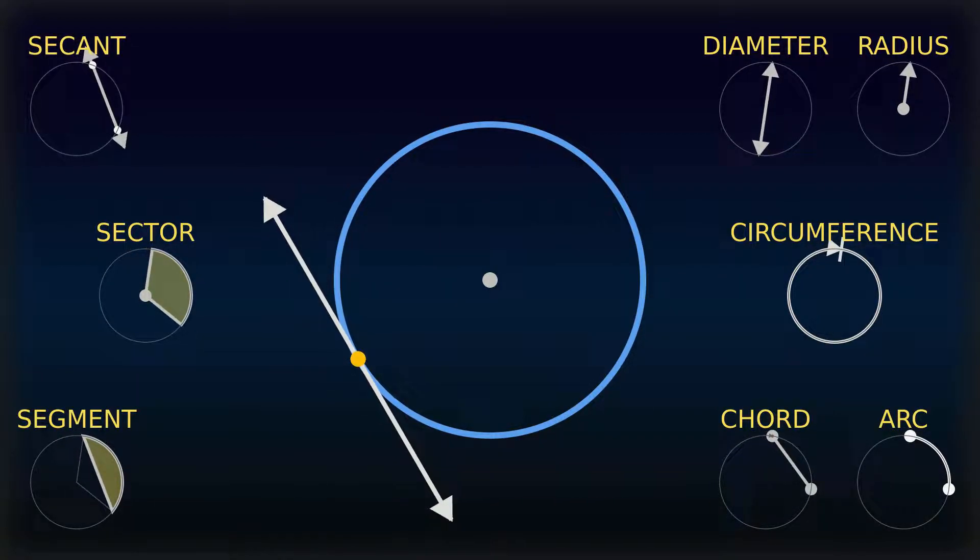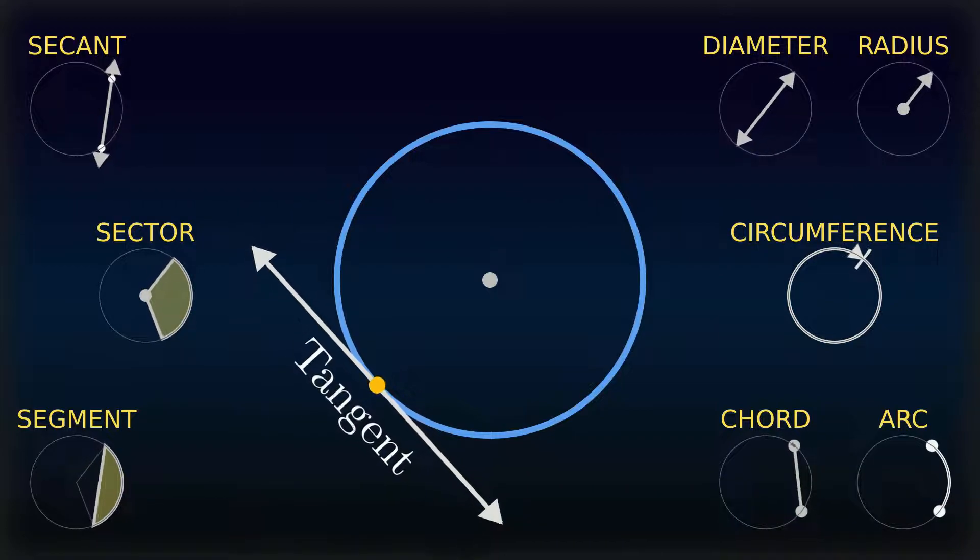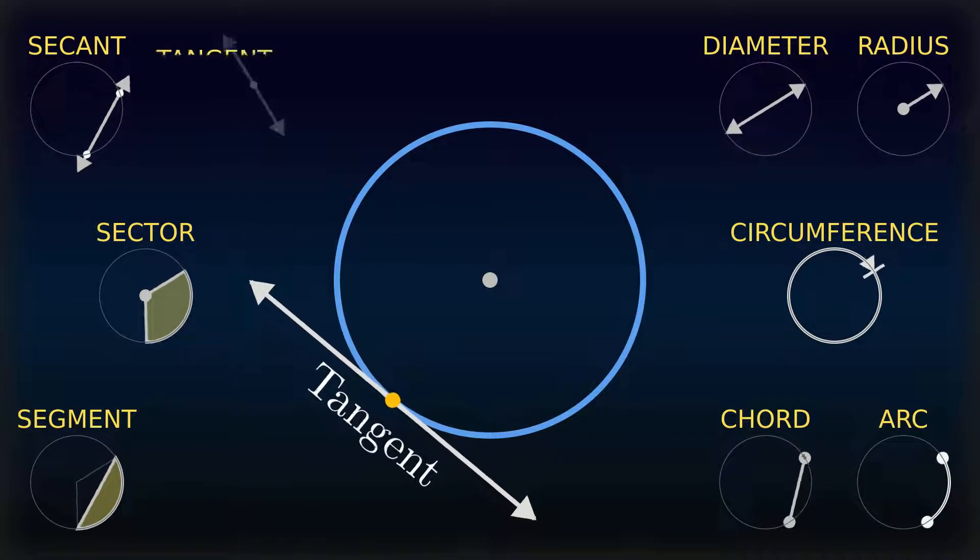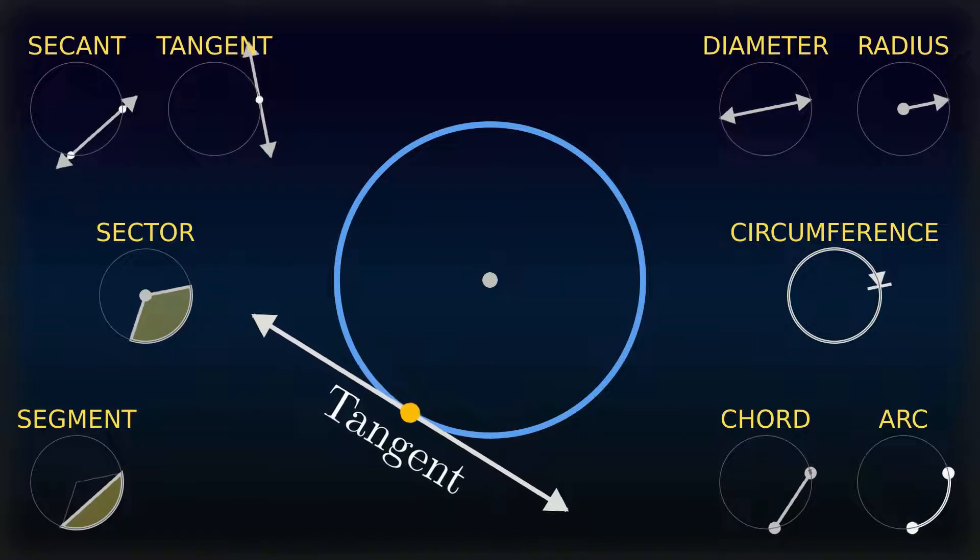A tangent is a coplanar straight line that has one single point in common with a circle. It touches the circle at this point.